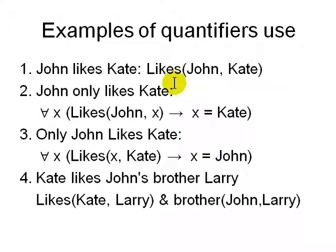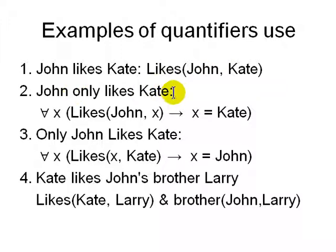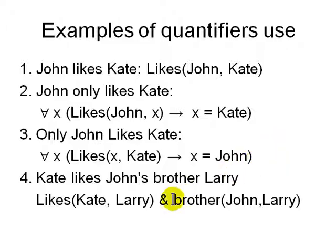John likes Kate — we say Likes(John, Kate), so there is a relation between two objects related by the operator 'likes.' This is different from Kate likes John — Likes(Kate, John) — there are two different directed operations. From John to Kate there is a like, but from Kate to John we don't know. John likes only Kate: For all X, if Likes(John, X) then X must be Kate. This is different from 'Only John likes Kate': For all X, if Likes(X, Kate) then X must be John. You can also combine relations: Kate likes Larry AND Larry is John's brother.